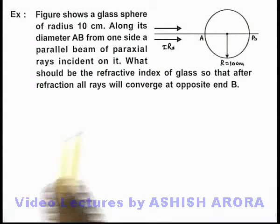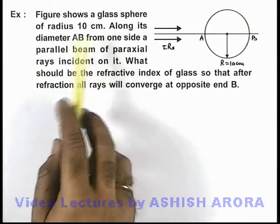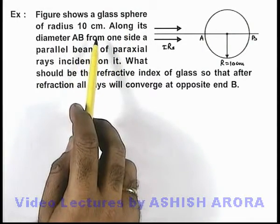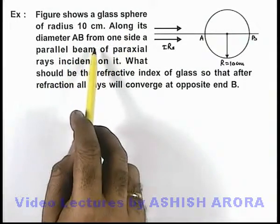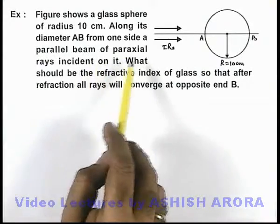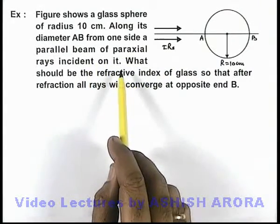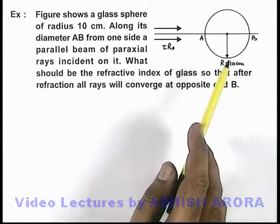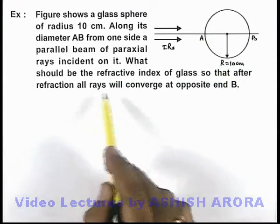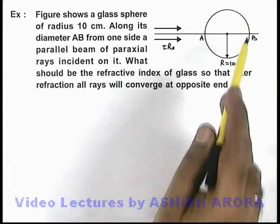In this example it is given that figure shows a glass sphere of radius 10 centimeter, and along its diameter AB from one side a parallel beam of paraxial rays is incident on it. It is asking what should be the refractive index of glass so that after refraction all rays will converge at the opposite end B.